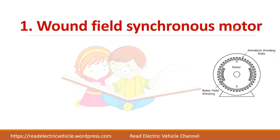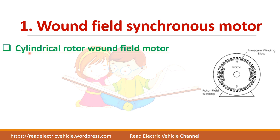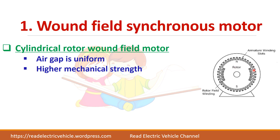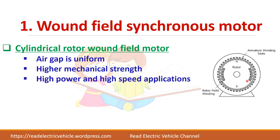Wound field synchronous motors are of two types. In the cylindrical rotor type, the rotor is cylindrical in shape and the air gap is uniform. They have higher mechanical strength, so this type of rotor is preferred for high power and high speed applications.